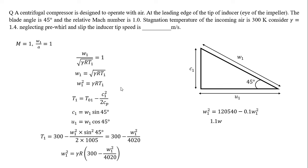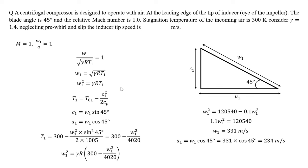So 1.1w1² = 120540, giving w1 = 331 m/s. Therefore u1 = w1 cos45° = 331 × cos45° = 234 m/s. The inducer tip speed they are asking for is 234 meters per second.